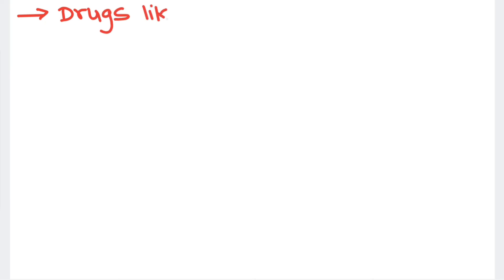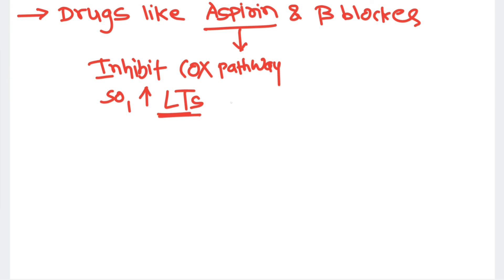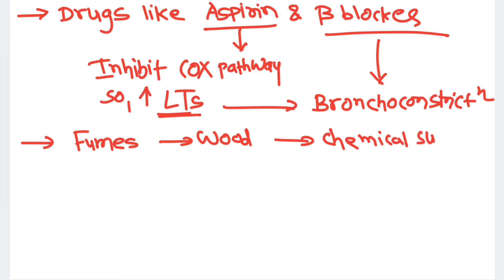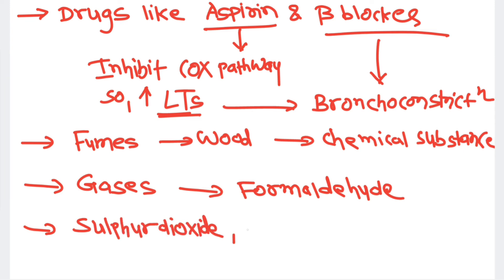Asthma can also be drug-induced, such as from aspirin or beta-blockers. Aspirin leads to asthma by inhibiting the COX pathway of arachidonic acid metabolism, resulting in compensatory increased leukotrienes, which are well known for causing bronchoconstriction. Beta-blockers directly lead to bronchoconstriction. Fumes, chemical substances, toxic gases, formaldehyde vapors, sulfur dioxide, and diesel-like air pollutants can also be responsible.